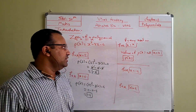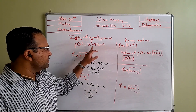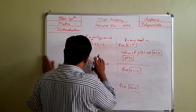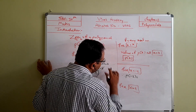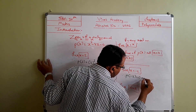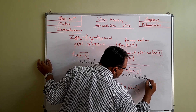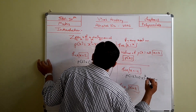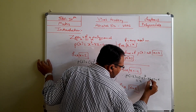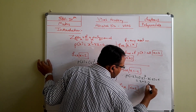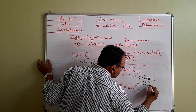Now, they are discussing if you put x equal to minus 1 in the same polynomial. So p of minus 1 for x squared minus 3x minus 4: instead of x we are putting minus 1, so minus 1 into minus 1 is plus 1, minus 3 into minus 1 is plus 3, and minus 4. So 1 plus 3 plus 4 minus 4 gives us 0 as the answer.